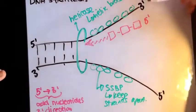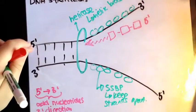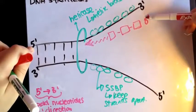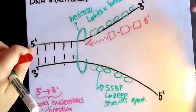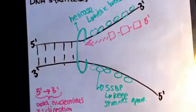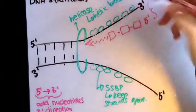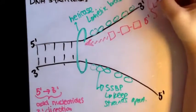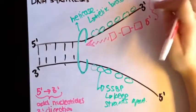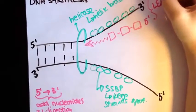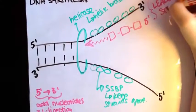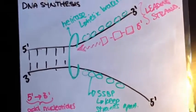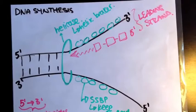So the parent strand running 3' to 5' has a daughter strand built 5' to 3'. Whenever it's being built continuously like this, since it's going from a 5' to 3' direction, it's being built continuously — and that's called our leading strand.